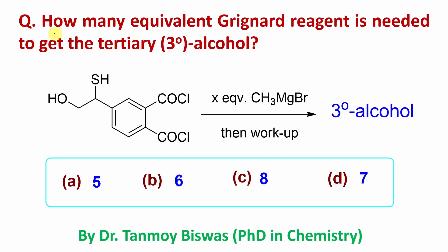Now, let's read the question. How many equivalents of Grignard reagent is needed to get the tertiary alcohol from this molecule? So actually here, if you react this with X equivalent of Grignard reagent, you get the tertiary alcohol. So you have to say how many equivalents of Grignard reagent needed to get the tertiary alcohol.